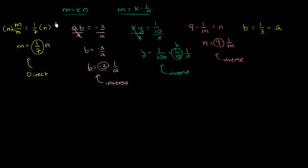This next one is trickier since the variables are already separated. If this were b = (1/3)·a, we'd have direct variation. But in this case we have b = 1/3 − a. It turns out this is neither direct nor inverse variation.